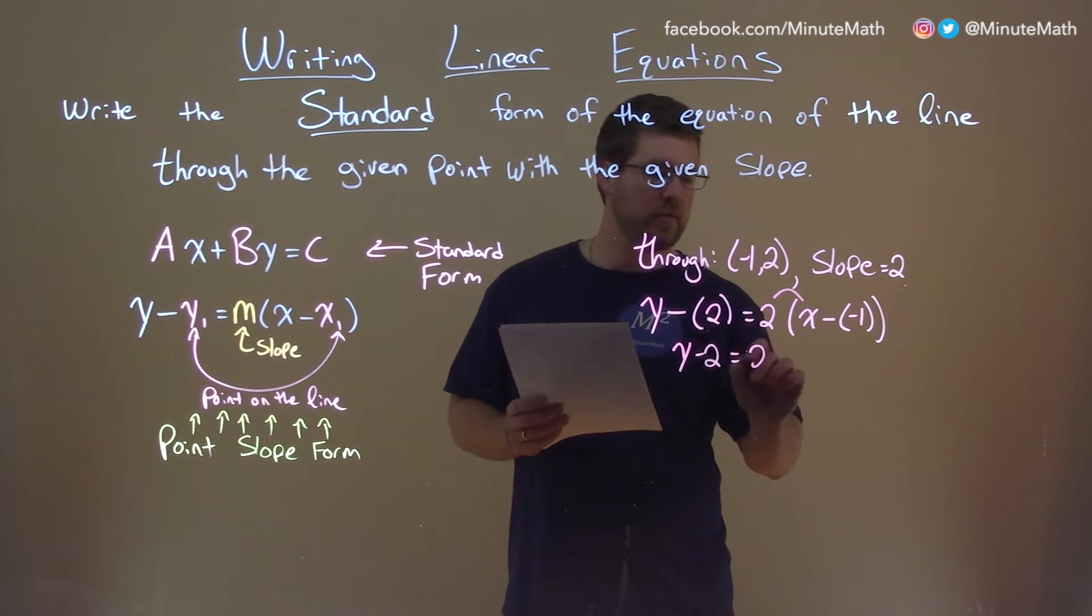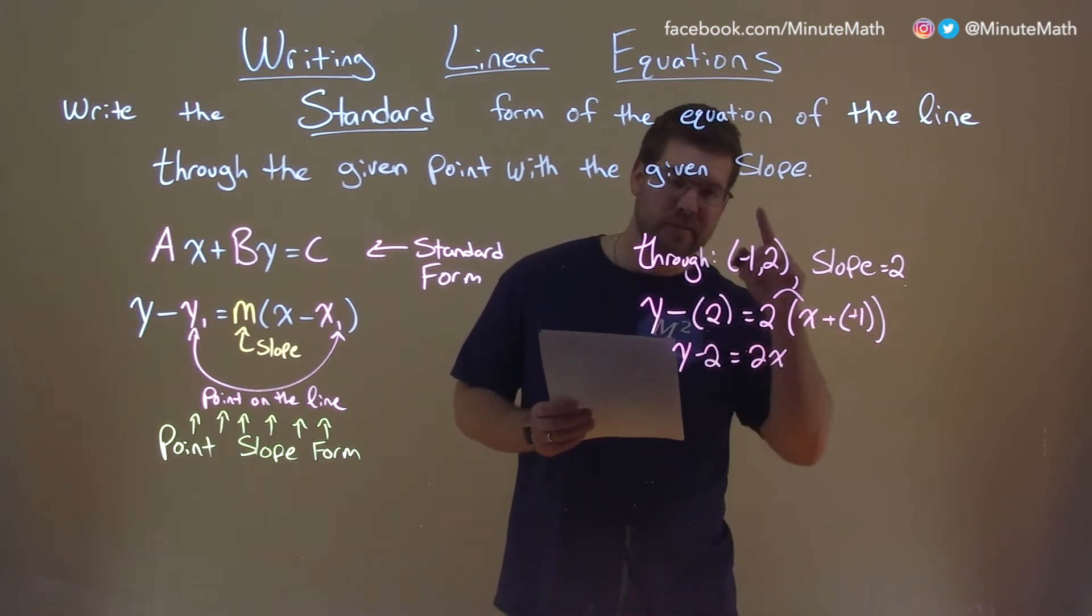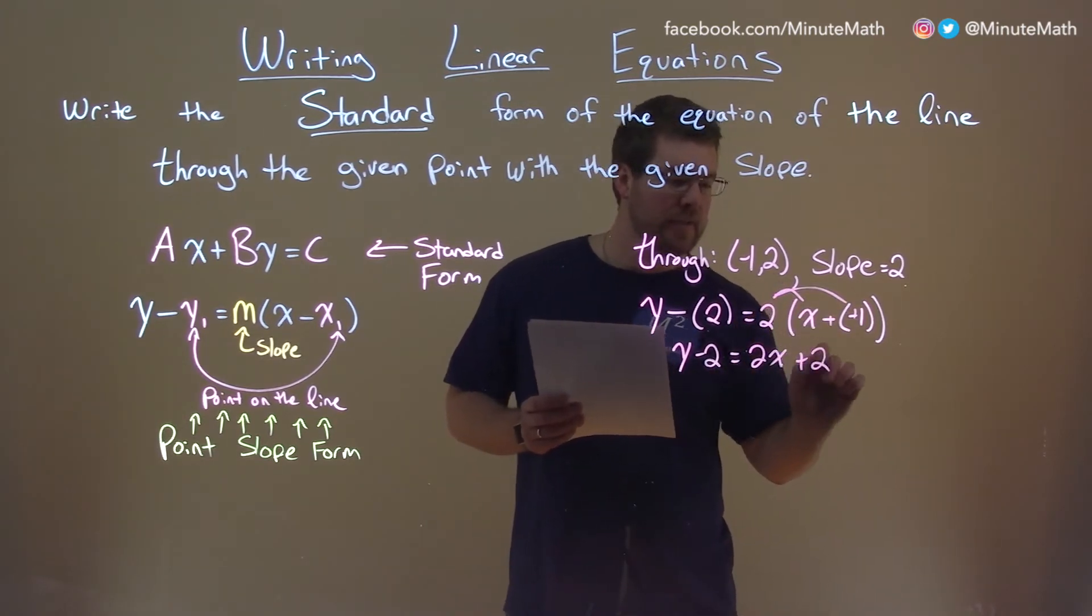2 times x is 2x. And don't forget, minus a negative plus a positive helps you out there. 2 times positive 1 now is a positive 2.